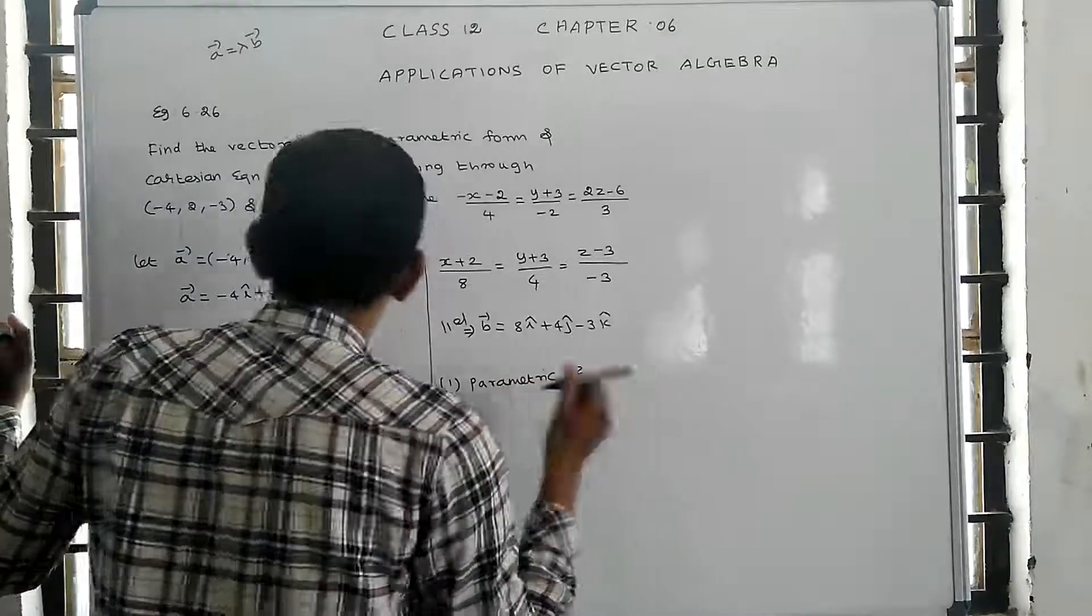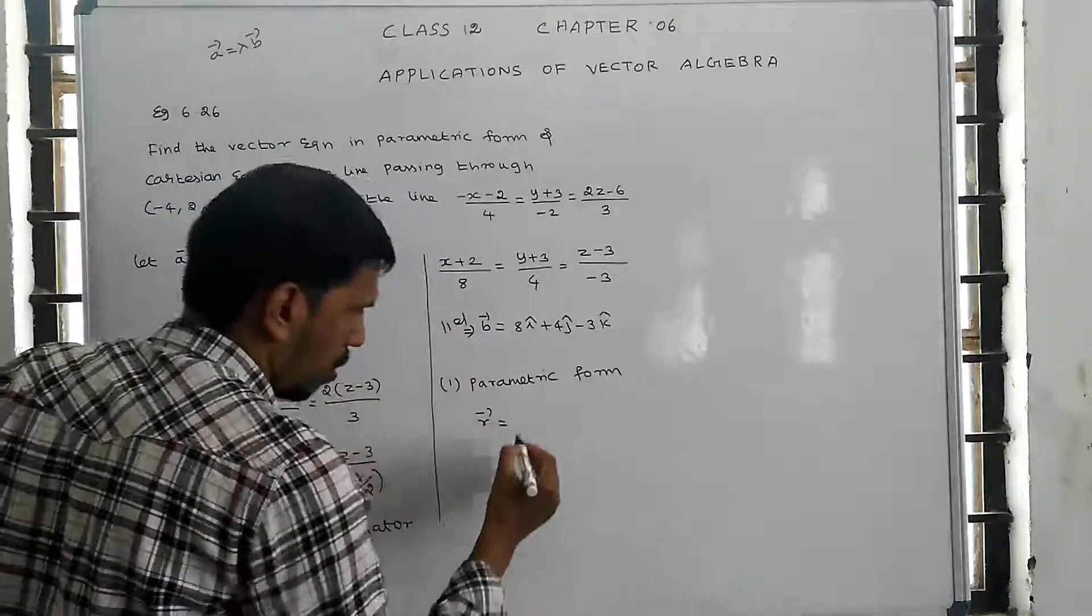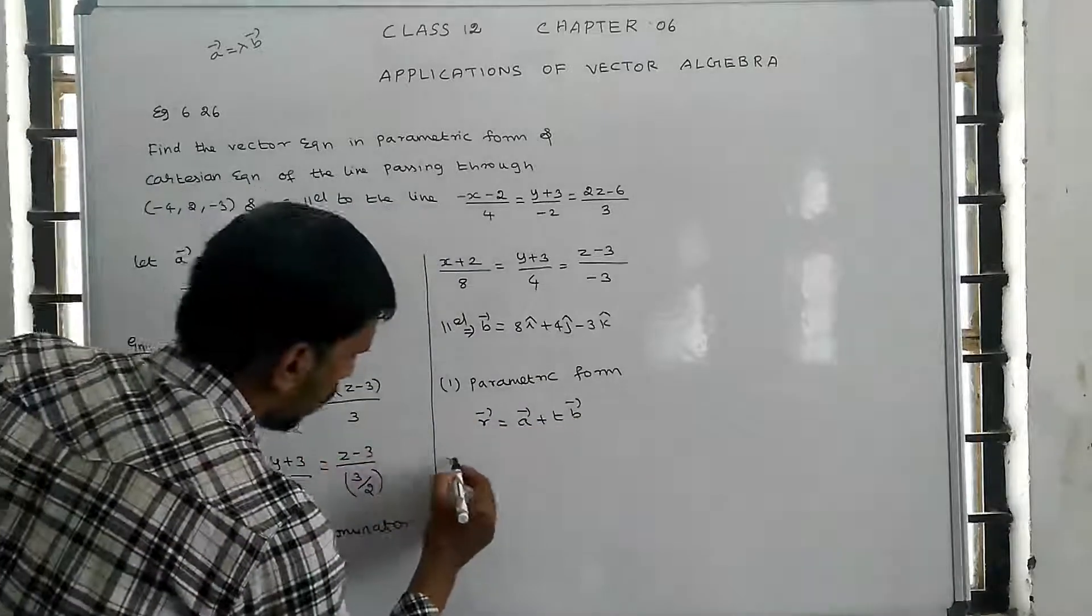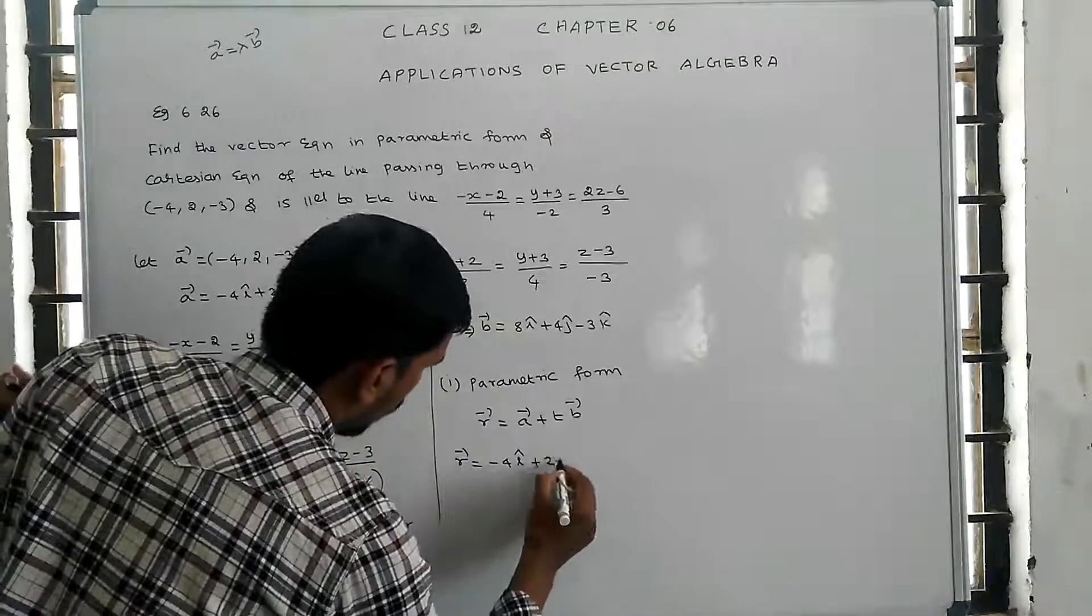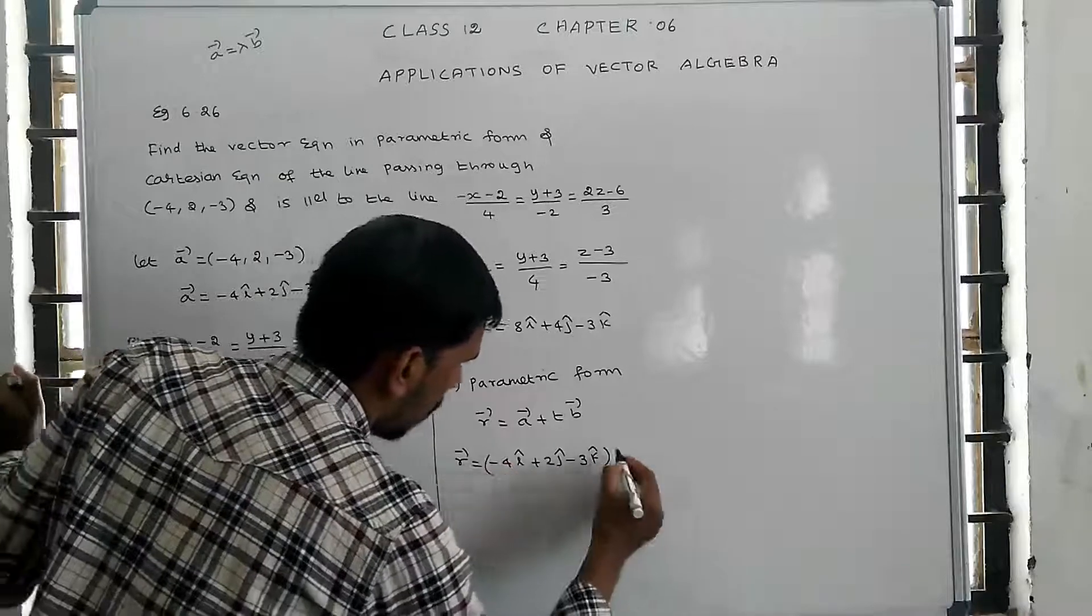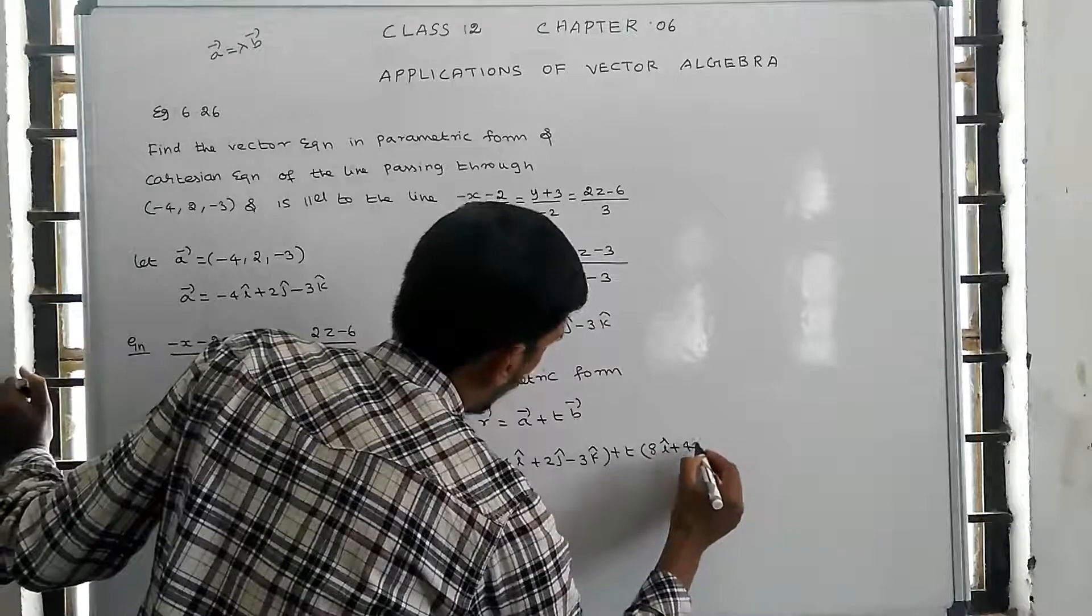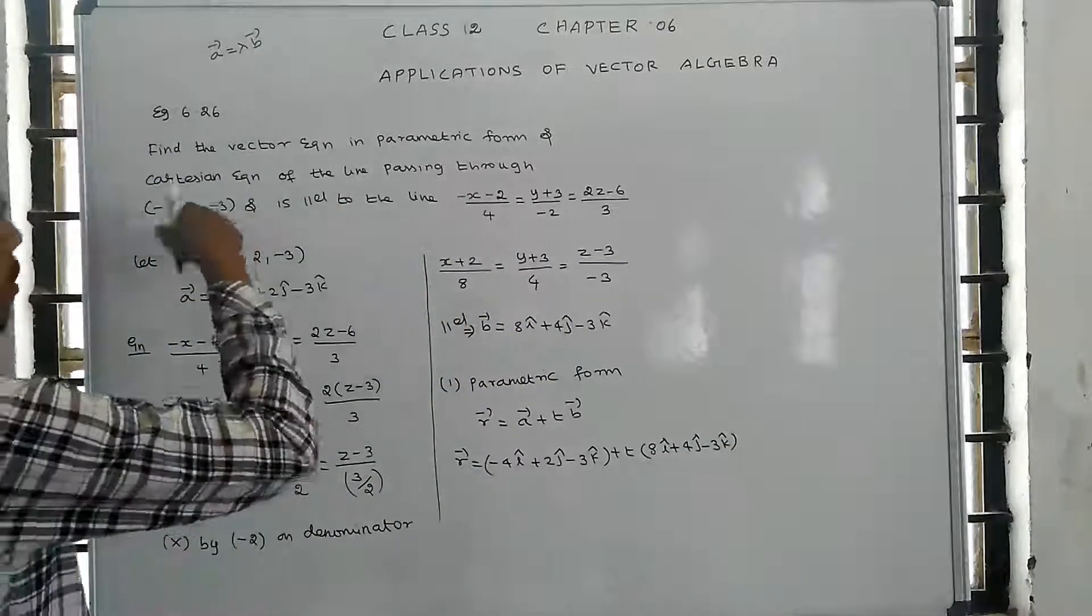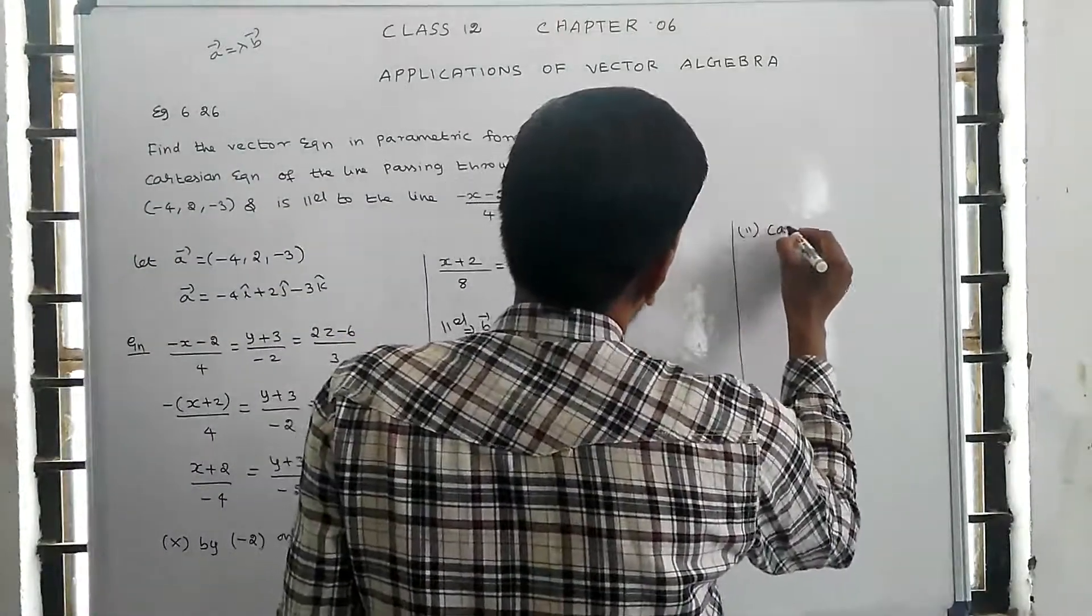Parametric form is R vector equals A vector plus t into B vector. Substituting, R vector equals minus 4 i cap plus 2 j cap minus 3 k cap plus t into (8 i cap plus 4 j cap minus 3 k cap). This is the Cartesian equation.